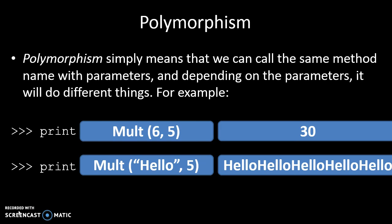So it's interesting that the same method — the multiply method — knows to return an integer when two integer parameters are passed in, whereas it will return a string type if a string and integer are passed in. So the same method is doing different things depending on what the parameters are that are coming in.